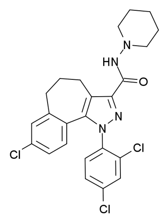NESS 0327 is a drug used in scientific research which acts as an extremely potent and selective antagonist of the cannabinoid receptor CB1. It is much more potent an antagonist, and more selective for the CB1 receptor over CB2, than the more commonly used ligand rimonabant, with a Ki at CB1 of 350 fM (i.e. 0.00035 nM) and a selectivity of over 60,000x for CB1 over CB2.